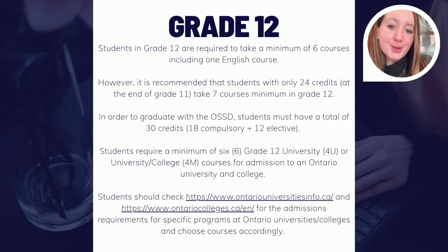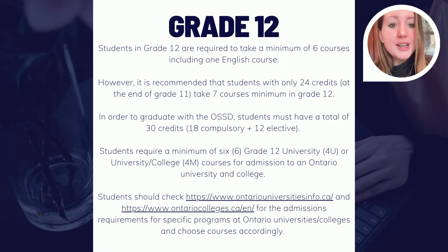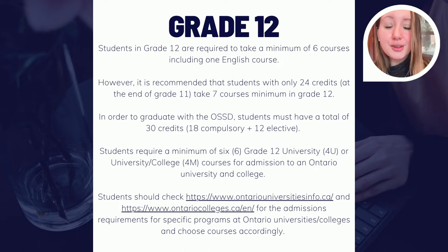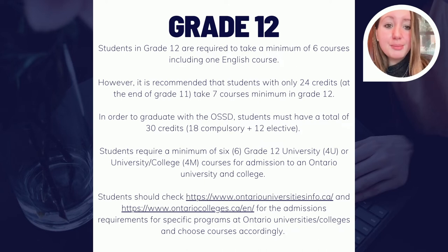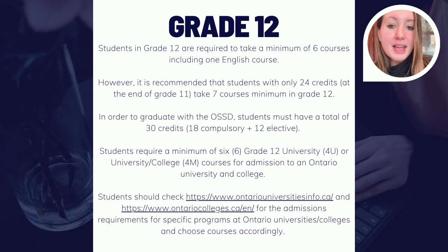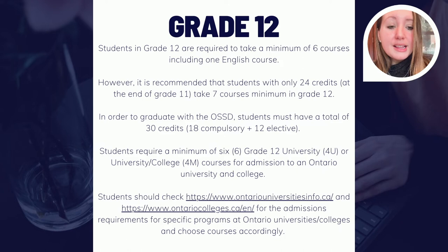For students going into grade 12, they are required to take a minimum of six courses. For any students who have earned only 24 credits by the end of grade 11, we recommend taking a minimum of seven courses to ensure they meet the 30-credit requirement of 18 compulsory and 12 electives. Students applying to university will require six grade 12 university-level or mixed-level courses. It is very important students are checking admission requirements for their desired university or college program.